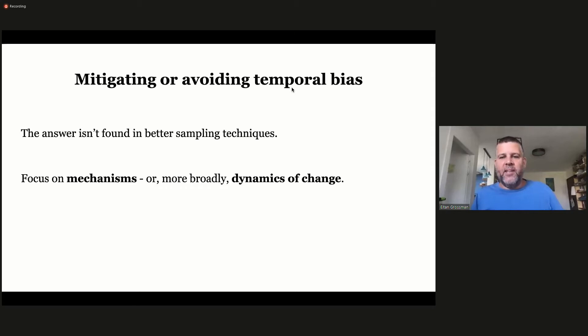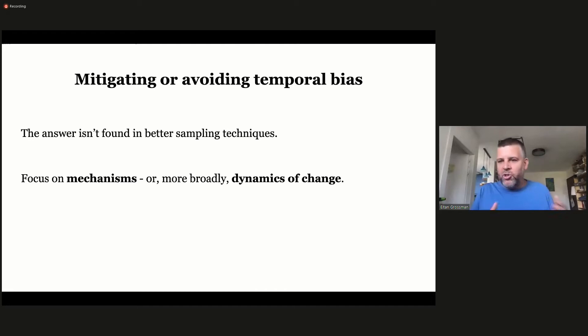How can we mitigate or avoid temporal bias? The answer is not found in better sampling techniques, because that will just leave us with extremely sparse data. Rather, as Balthasar suggested, we should focus on mechanisms — the dynamics of change themselves — including the causal triggers and cognitive, communicative, social, and environmental factors that end up biasing change in one direction or another.